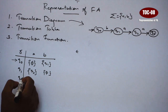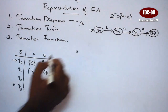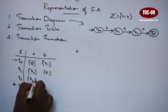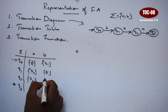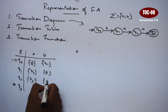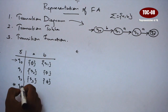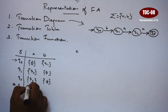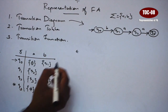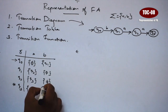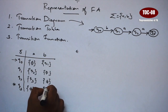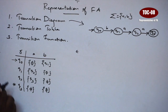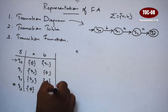Next, Q2 on A goes to Q3. Q2 on B is null. Next, Q3 — Q3 on A is null, and Q3 on B — what transition? So this is null as well. So this is the transition table.